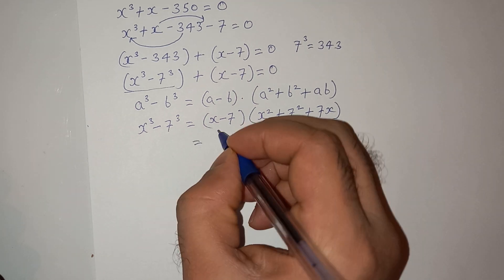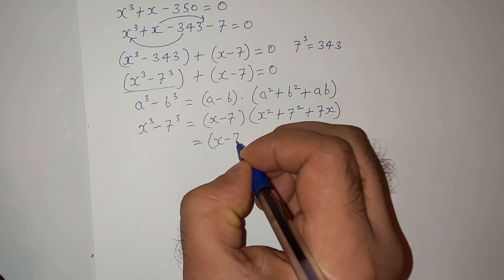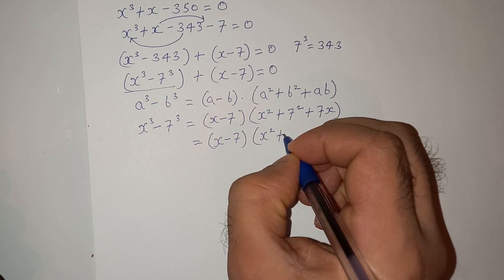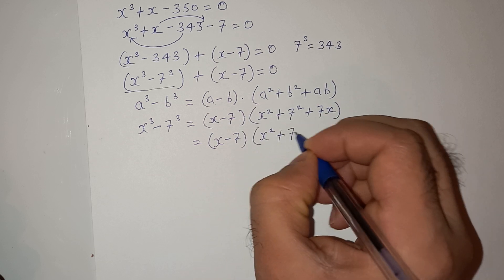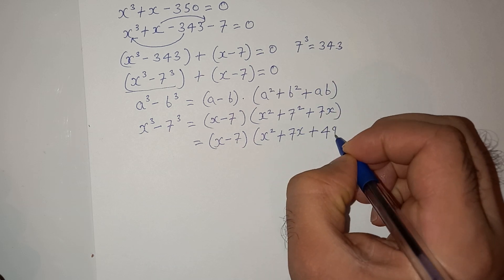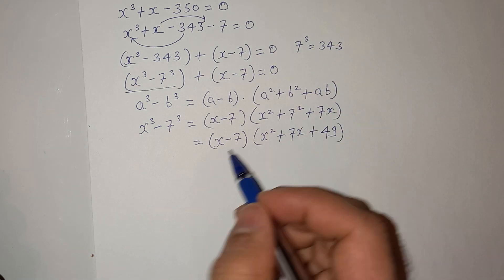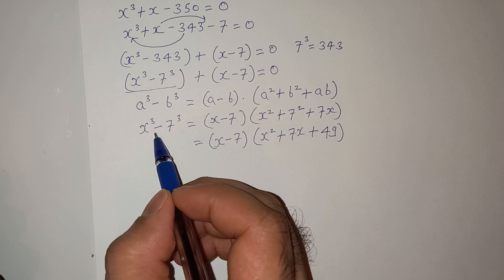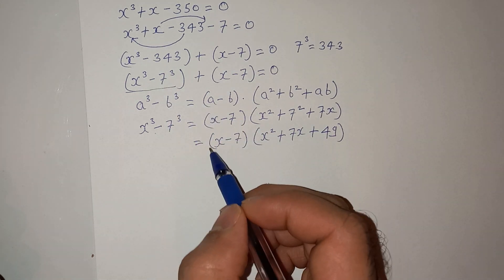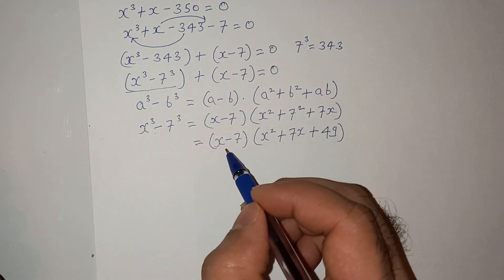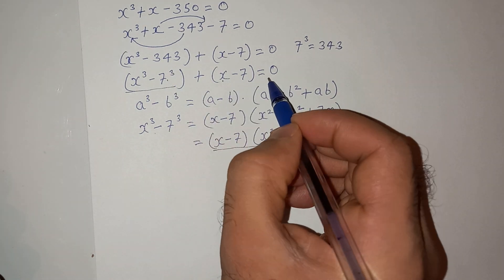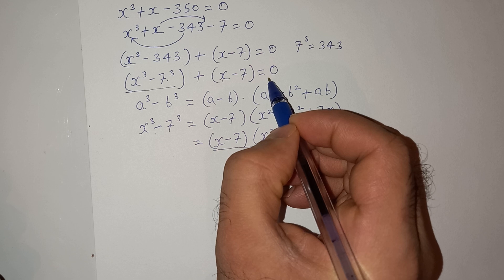So we can write this as (x minus 7)(x² + 7x + 49), since 7² is 49. This is the value of x³ minus 7³. Now we will replace x³ minus 7³ with this value and then add x minus 7, setting it equal to zero.